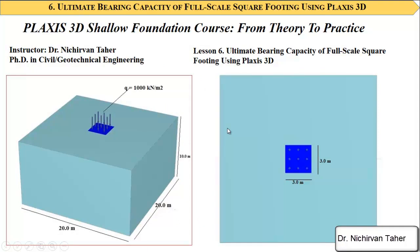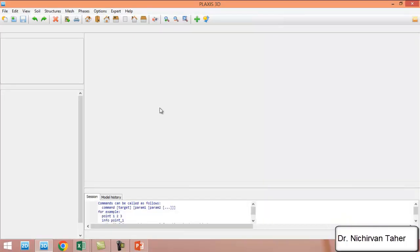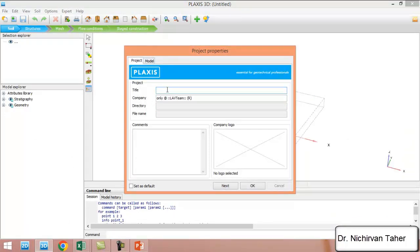Hello everyone, welcome back again to the PLAXIS 3D Shallow Foundation course, from theory to practice. This is lesson 6. In this tutorial we are going to estimate the ultimate bearing capacity of a full-scale square shallow footing using PLAXIS 3D. The load which we are going to apply to the footing is 1000 kilonewton per square meter.